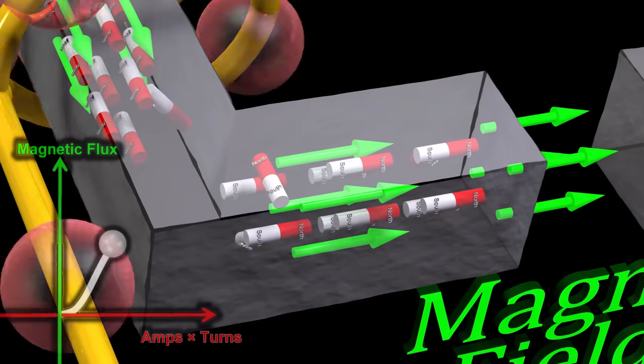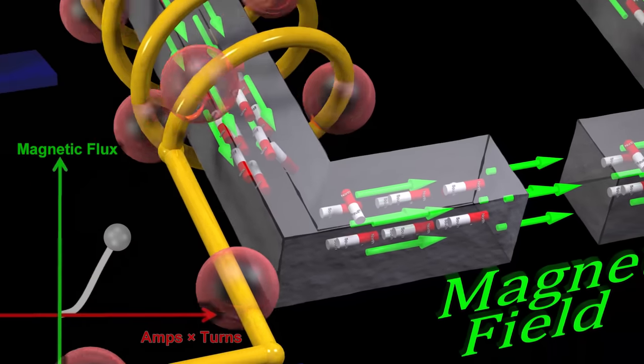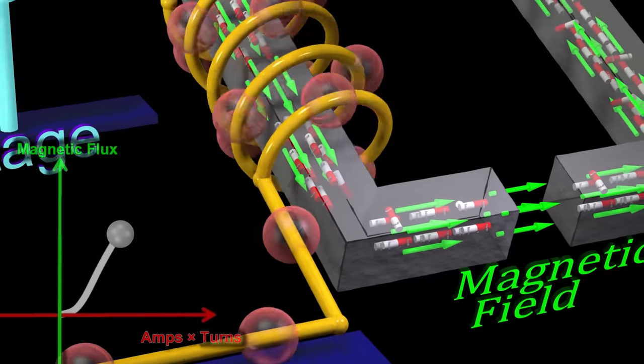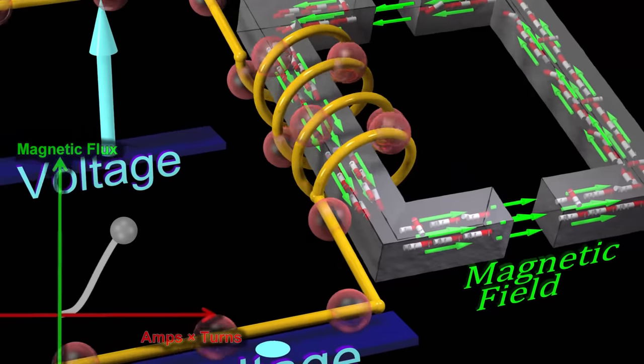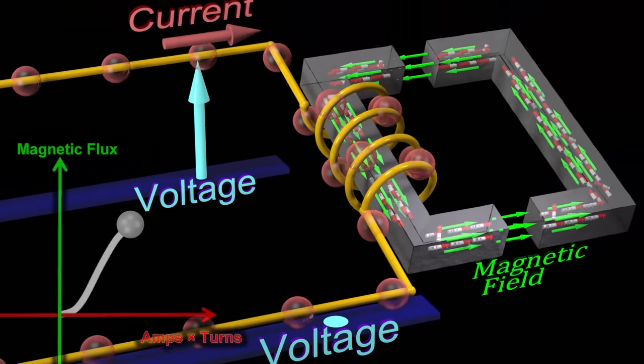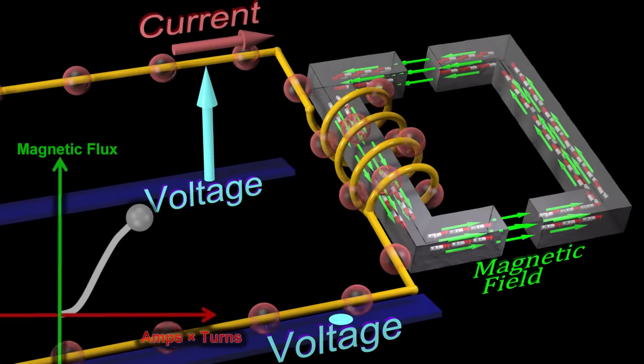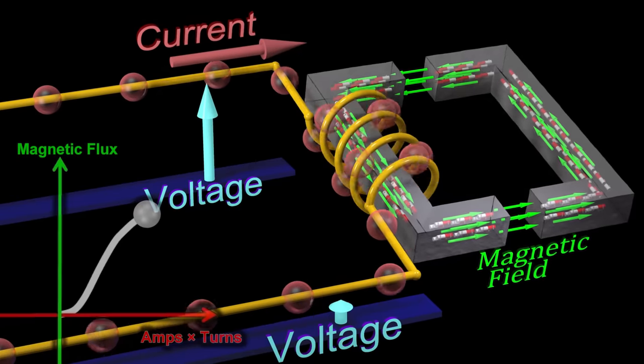After 100% of the magnets are already aligned, increasing the magnetic field even further involves much greater increases to the current.